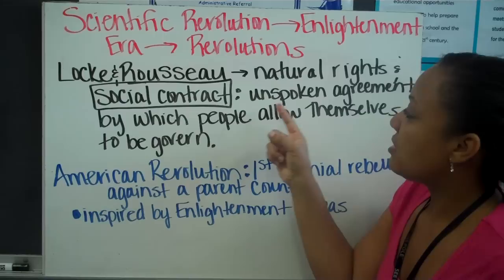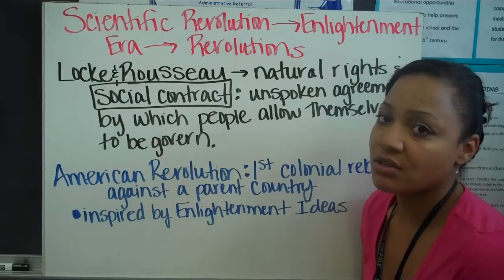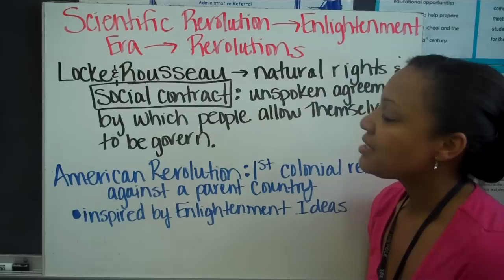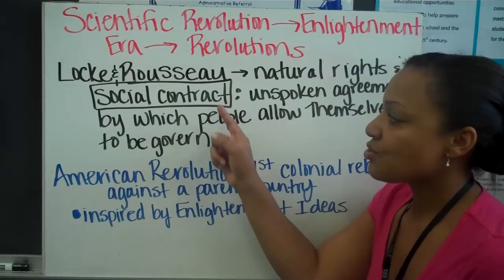Looking at Rousseau — and John Locke also believed in the social contract — that is basically an unspoken agreement by which people allow themselves to be governed. When you come to Durant Road Middle School, you allow the teachers to govern you by putting away your cell phones and not bringing electronics, in the belief that we will teach you and not violate your rights. The same applies to the United States government: we let the government rule over us, but we expect the government to protect our rights.